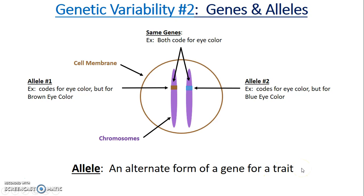Another name for trait is phenotype. Here we see the gene for eye color that will result in different traits: brown eye color and blue eye color.